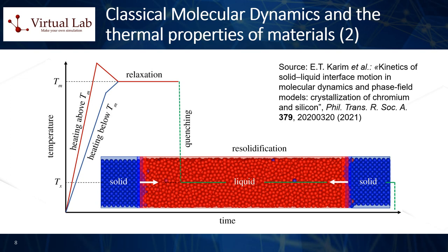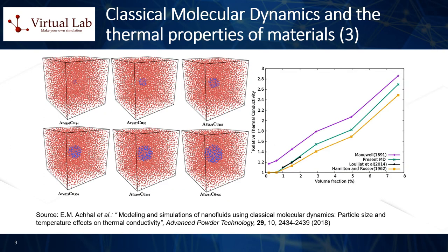5. Diffusion coefficients. The diffusion coefficient, which can contribute to thermal transport, can be calculated from the mean squared displacement of particles in the system. MD simulations provide a powerful tool for calculating thermal properties of materials because they capture the atomic level interactions and dynamics that underlie these properties. However, it's important to remember that these simulations rely on empirical potential models to describe atomic interactions. The quality and reliability of MD-derived thermal properties are therefore dependent on the accuracy of the potential model used. Moreover, while MD simulations can handle relatively large systems and longer timescales compared to quantum mechanical methods like DFT, they can still be computationally demanding for very large systems or for properties that require long simulation times to accurately compute. Therefore, MD results should ideally be validated with experimental data whenever possible.